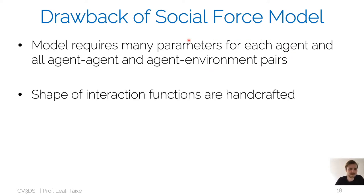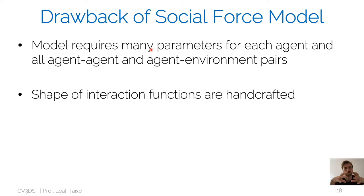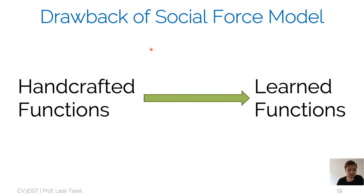There are drawbacks of the social force model: you need to know parameters for every agent-agent pair and every agent-environment pair. Setting a constant for all pedestrians loses the distribution of different preferences present in reality. Also, the shape of the interaction function is constrained — if I assume an exponential potential, I've already limited the family of functions. This is why, since 1998, people moved from handcrafted functions to learned functions. The development of deep neural networks gave us tools to build more sophisticated models.